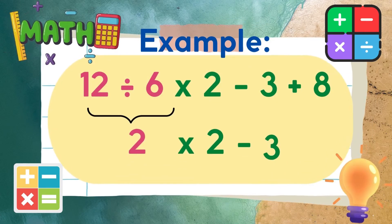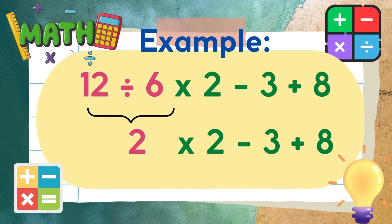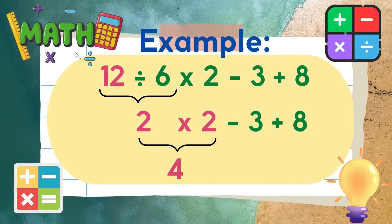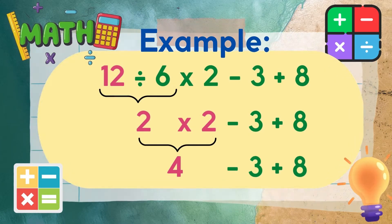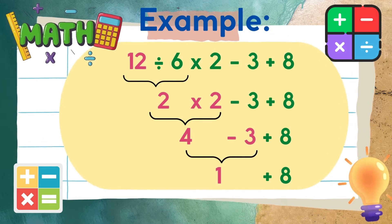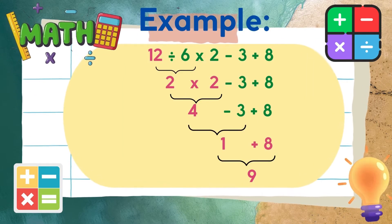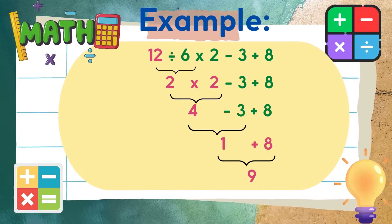12 divided by 6 is 2. Next, multiply. 2 times 2 is equal to 4. Then subtract. 4 minus 3 is equal to 1. Finally, add 1 and 8. So the final answer is 9.